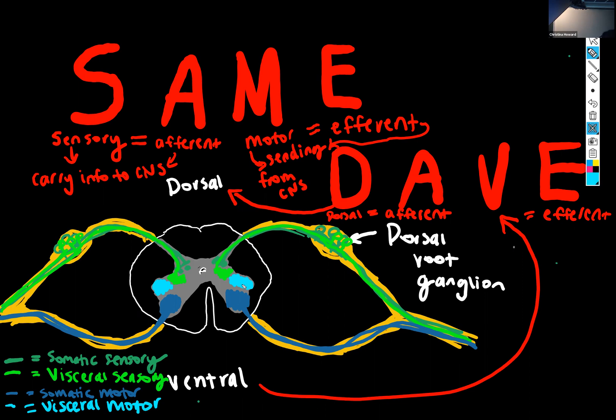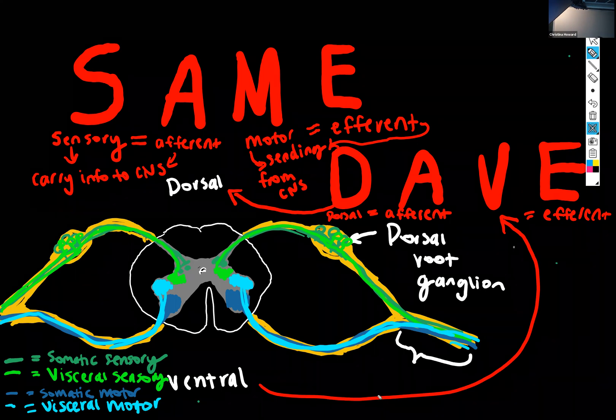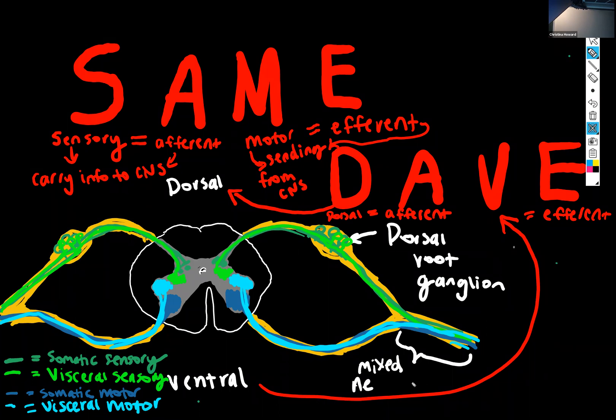And then we can't forget our visceral motor as well, which also exit via the ventral root. So if you look at the little chunk of spinal nerve I've got here, it's got all of these colors, meaning it is mixed nerve. So mixed meaning it carries both sensory and motor information, and also mixed meaning that it carries both somatic and autonomic information. So that is SAME DAVE. And with that, I'm going to put my computer back together and stop recording.